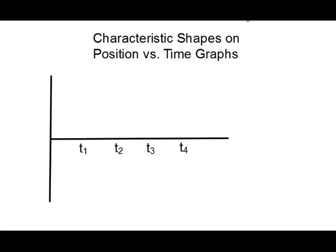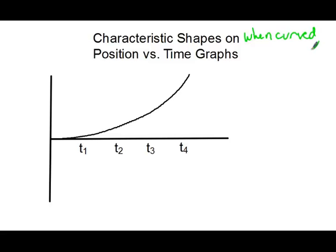The first thing we're going to look at is a nice upward exponential curve. How is this different than the other ones we've seen so far? Exactly — it's curved. When the graph is curved, velocity is not constant. Therefore, there is some kind of acceleration. The object is speeding up or slowing down.